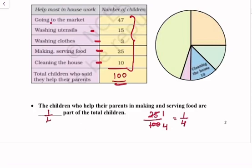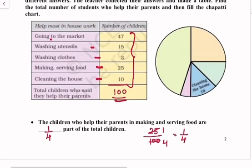Now we will fill the chapati chart. Biggest part showing the children who help their parents going to the market - going to the market, 47 children.